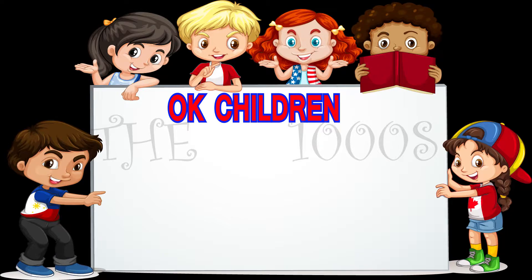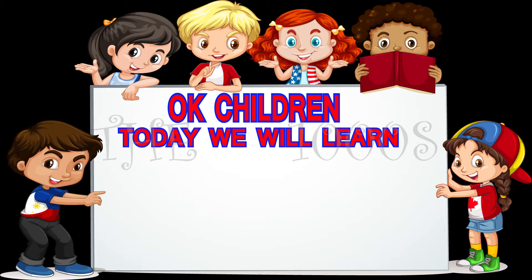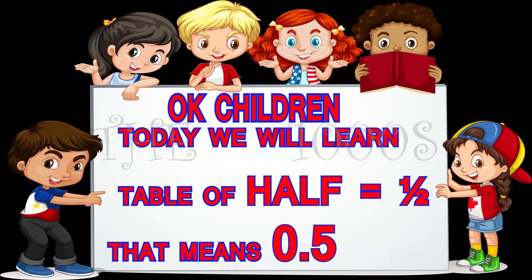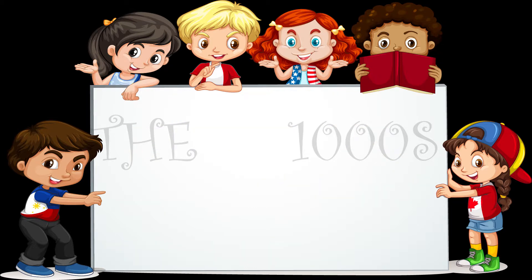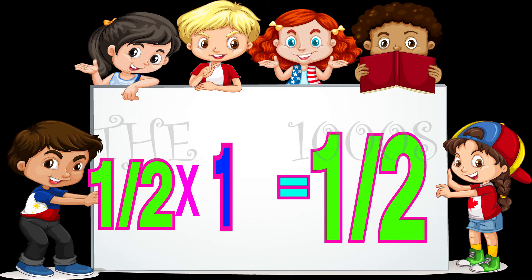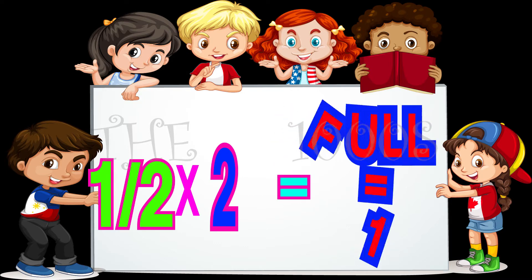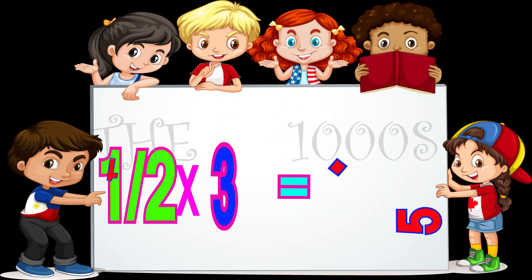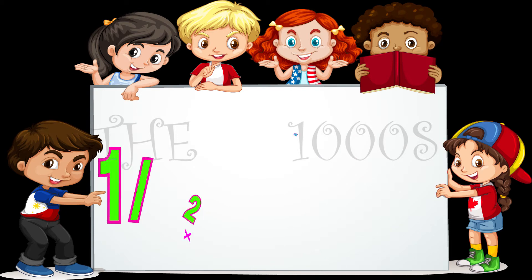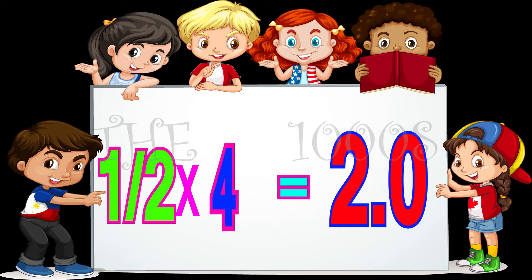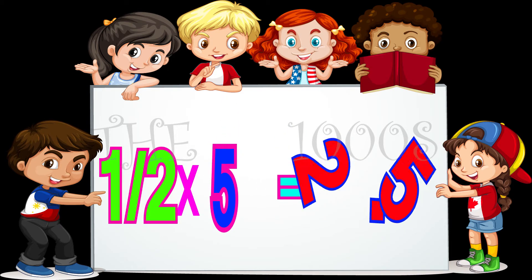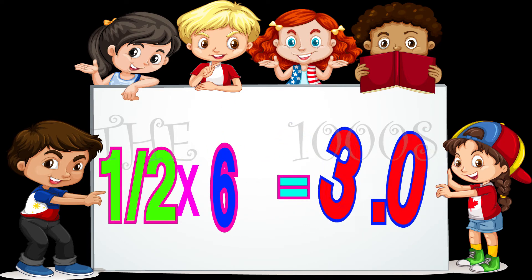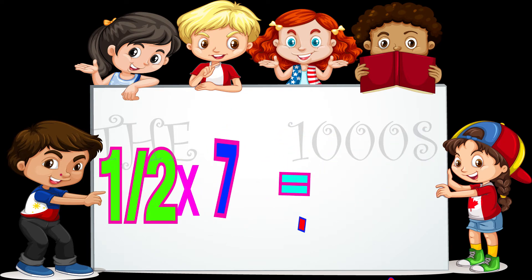Okay children, today we will learn the table of half, that is 0.5. Half ones are half. Half twos are full, means 1. Half threes are 1.5. Half fours are 2. Half fives are 2.5. Half sixes are 3. Half sevens are 3.5.